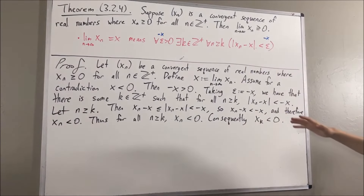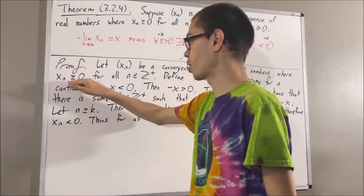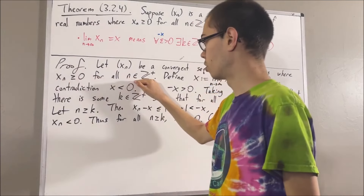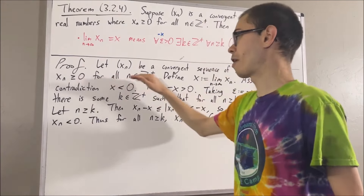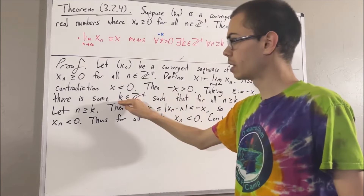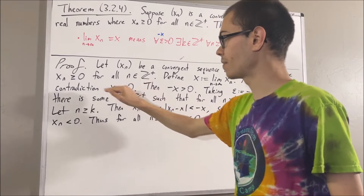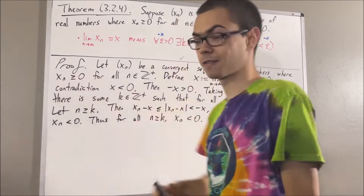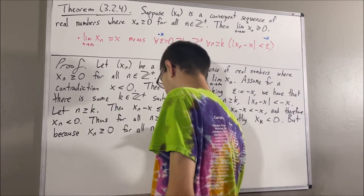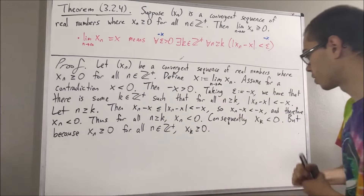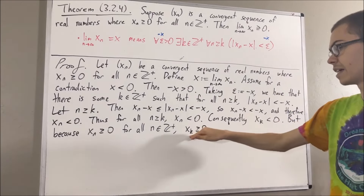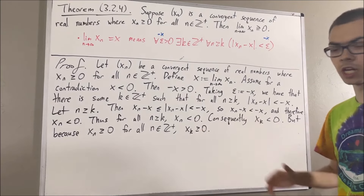But remember, we're working under the assumption that xn is greater than or equal to zero for all positive integers n. Since this statement works for every positive integer, it must work for the positive integer k. So taking n to be k, we have that xk is greater than or equal to zero. So xk is less than zero and xk is greater than or equal to zero, which gives us a contradiction.